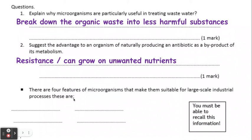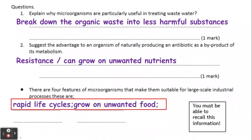So why do we actually use microorganisms? They have a very rapid life cycle, which means we don't have to wait long for them to produce the substances we want. We can grow them on unwanted food, which makes it cheaper — we don't have to provide high quality nutrients, we can give them unwanted waste food to grow on.